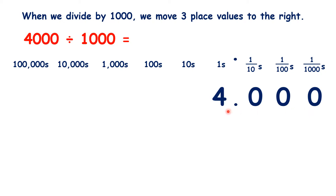But 4.000 just tells us that we have four units, no tenths, no hundredths, and no thousandths. So if we have zeros at the end of a number after the decimal point, we can ignore them. So our answer to 4,000 divided by 1,000 can just be written as four.